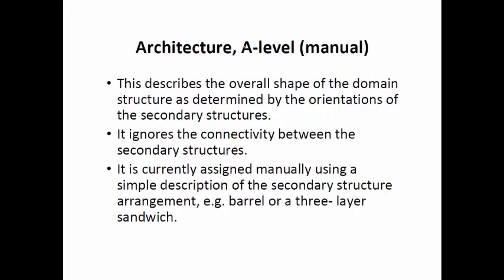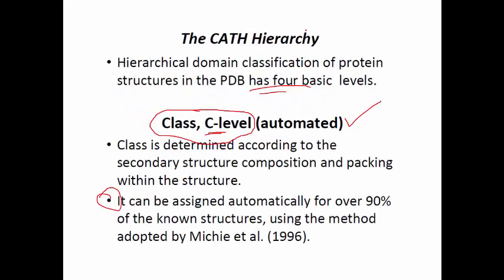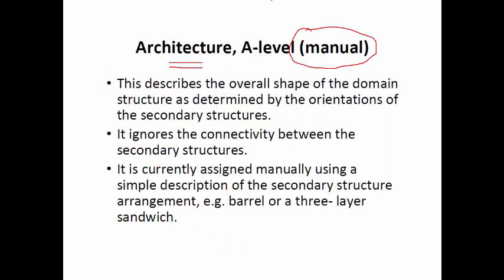The second hierarchical unit is the A-level, i.e., Architecture level. This part is automated — CATH A-level classification and grouping is at the automation level. Here, classification defines the overall shape of the domain. The orientation is defined, but connectivity between secondary structures is ignored at A-level classification. Typically, beta-barrel and 3-layer sandwich structures are examples of A-level classification.